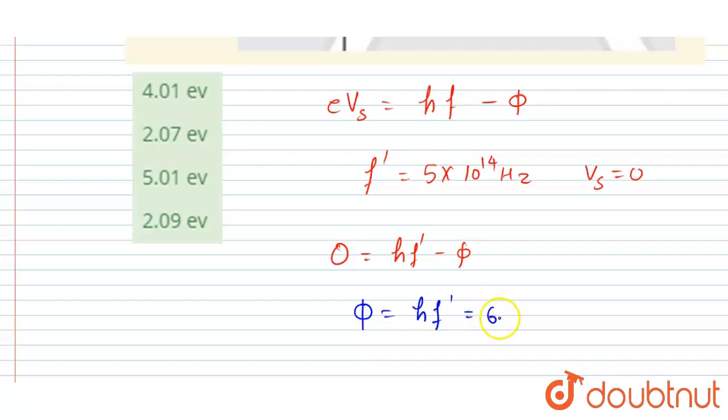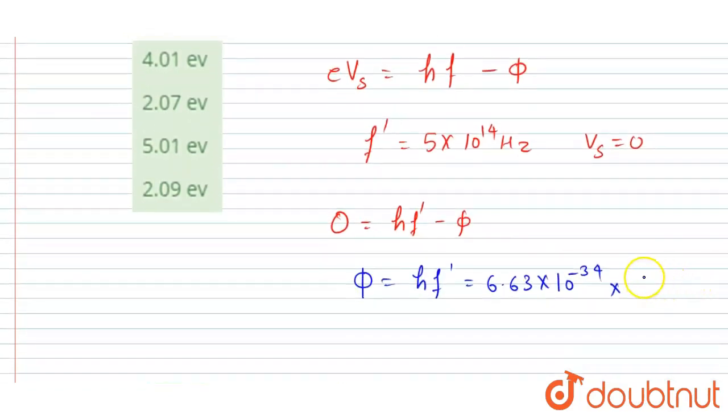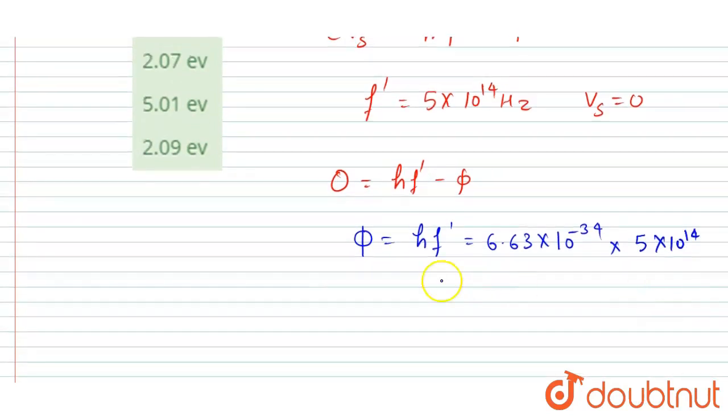And we know that the value of Planck constant is 6.63 into 10 to the power minus 34, and f dash we already calculated here, 5 into 10 to the power 14 hertz. So this will be the work function in joule.